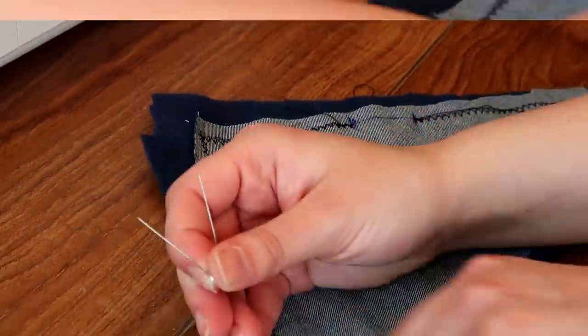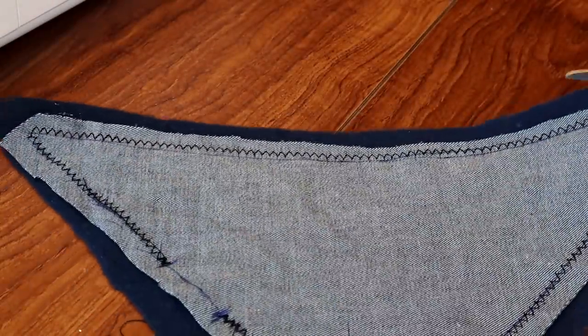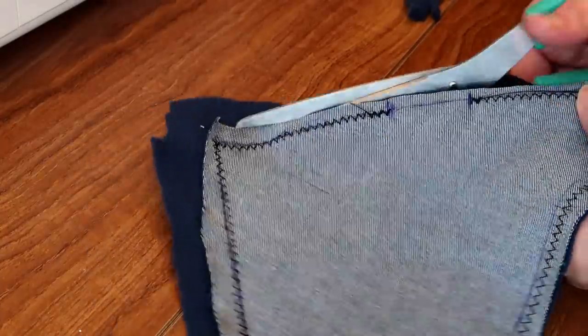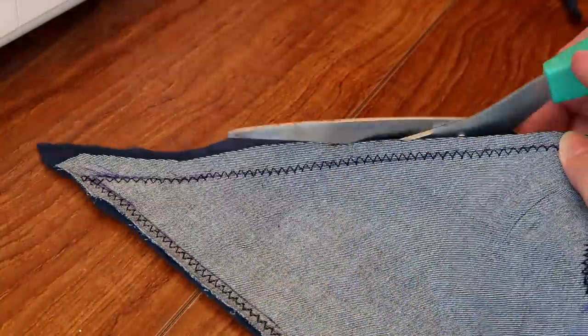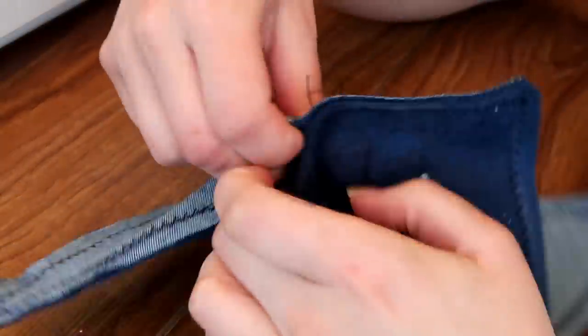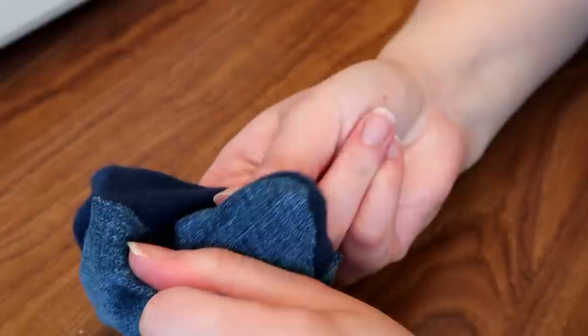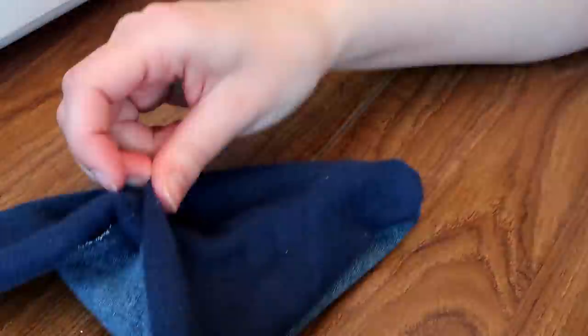Now we can remove the pins and trim any excess material. Now remember that gap I told you to leave? Well now we can turn it inside out, pull the material through and our hammock is almost done. You can use a pencil or pen to really push out those corners.